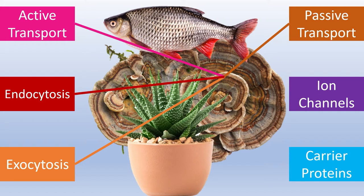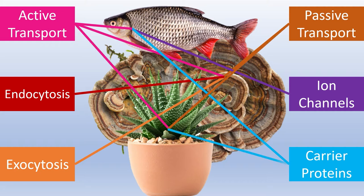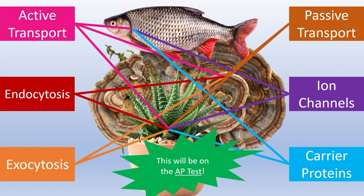Or that a fish's gills use ion channels, carrier proteins, and modes of active transport to help the fish regulate its water content? Even a plant, which may seem simple, uses all the different mechanisms of transport available. Understanding how these mechanisms of transport work together will definitely be on the AP test.